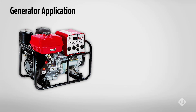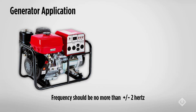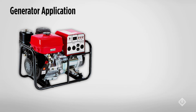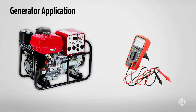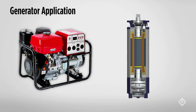The frequency of the delivered voltage will be a function of the generator engine's RPM. If the motor is running slower, output frequency could be a few hertz below 60. The frequency should be no more than plus or minus 2 hertz of 60 hertz. Confirm power frequency with a meter and consult the manufacturer's instructions for adjustment. The thrust bearing in a submersible motor requires a minimum speed of 30 hertz. It is important to start the generator and allow it to stabilize prior to starting the pump motor, and to stop the pump motor prior to shutting down the generator.